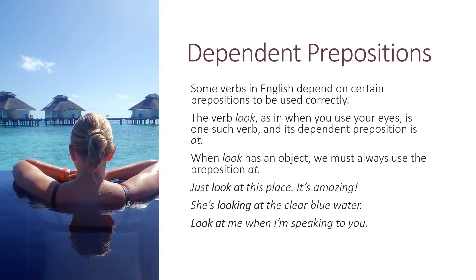Some verbs in English depend on certain prepositions to be used correctly. The verb look, as in when you use your eyes, is one such verb, and its dependent preposition is at. When look has an object, we must always use the preposition at. For example: 'Just look at this place — it is amazing.' 'She is looking at the clear blue water.' 'Look at me when I am speaking to you.'